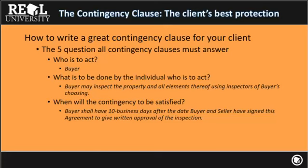Then you have the timeline of what is to be satisfied. The buyer shall have 10 business days after the date the buyer and seller have signed this agreement to give written approval of the inspection. That's pretty well thought out, because it doesn't say 10 days or 10 calendar days — it says 10 business days, which doesn't count Saturday and Sunday. You could also write 10 banking days or 10 calendar days. If you write just '10 days,' most judges would say your intent was 10 calendar days. If you want to be specific, write '10 calendar days.' The point is it tells you when that contingency is satisfied.